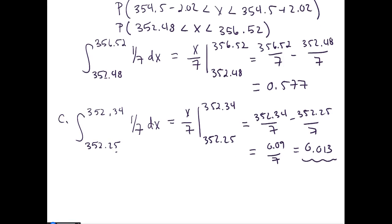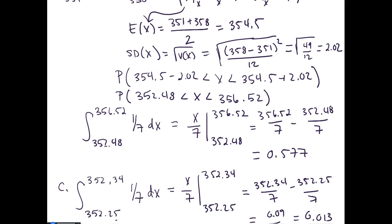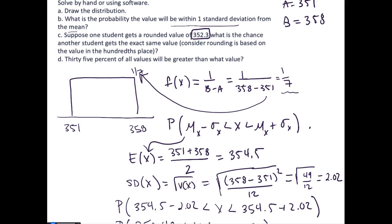Lastly, the last question in this series is: 35% of all values will be greater than what value? It's essentially saying 35% of all values are going to be greater than, so the greater than is the piece here. What it's looking for is this value in which 35% of the area is above that particular value, and that would mean 65% of our area is below that particular value.